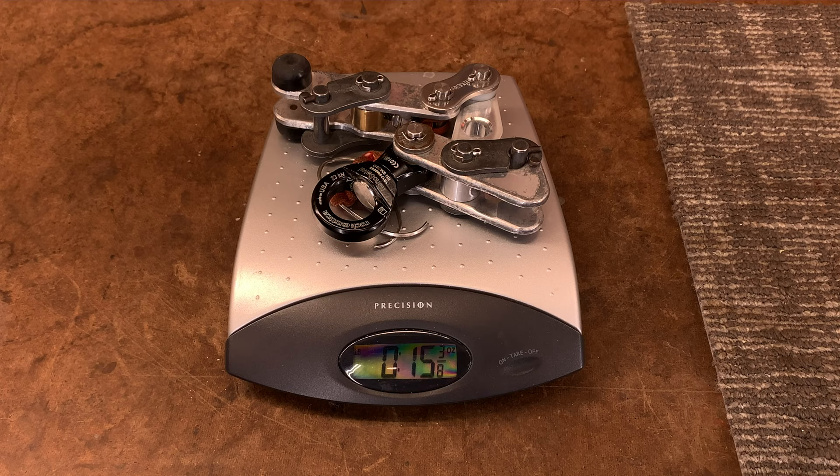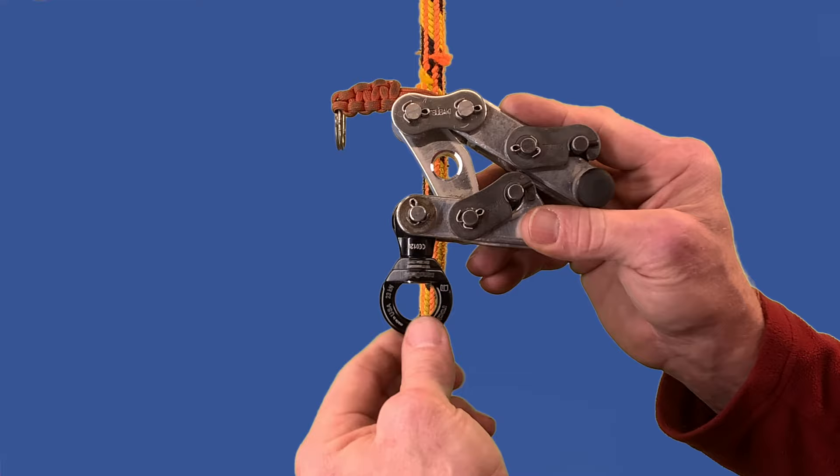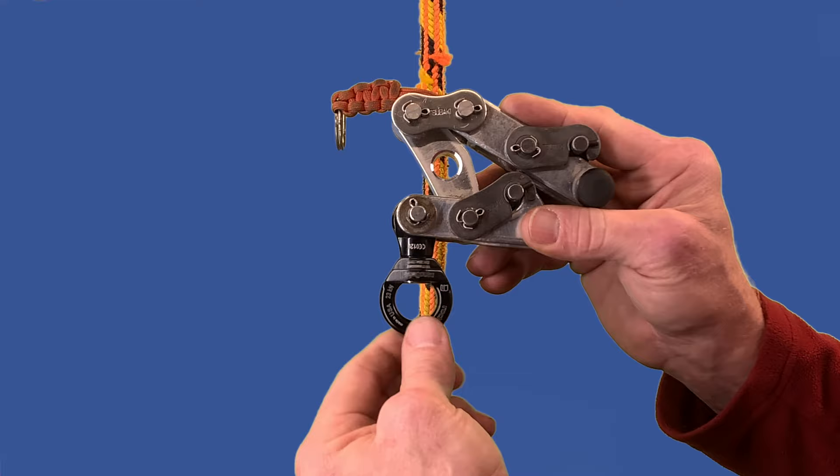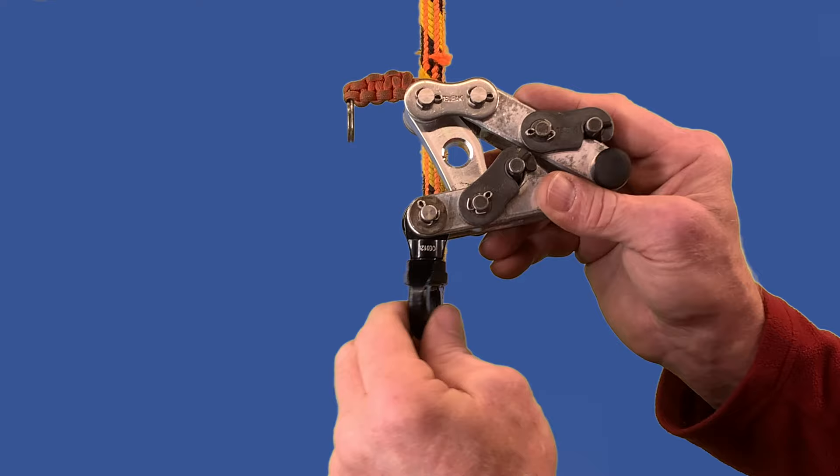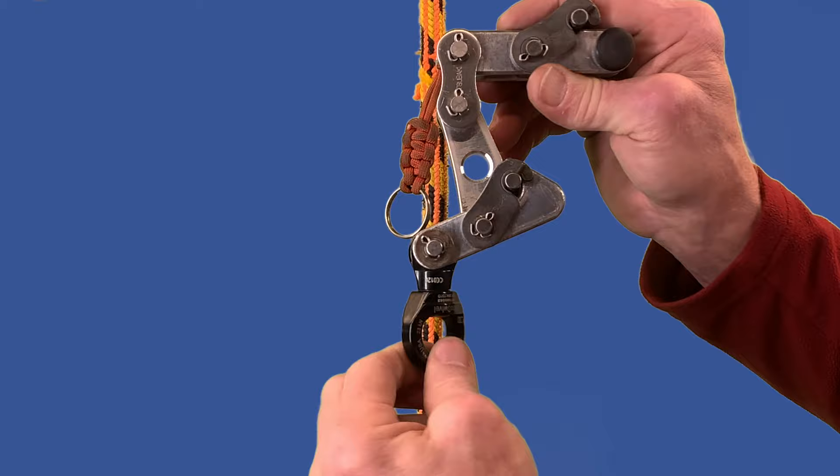This device weighs in at about 15 ounces, maybe 15 and 3/8 ounces. That's with this non-standard Rock Exotica nano swivel. This is something Gordon recommended putting on this device. This helps to manage the device when it's under weight, and when I'm moving my body underneath it, the device will stay stationary.